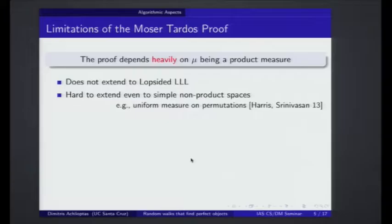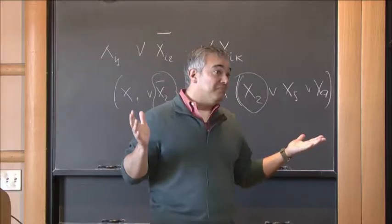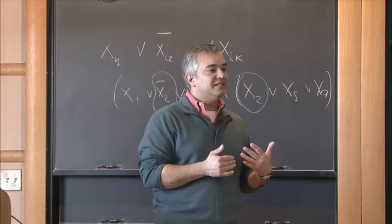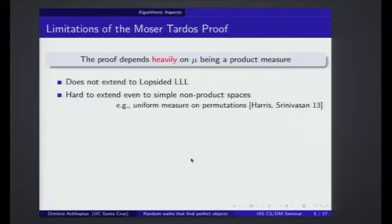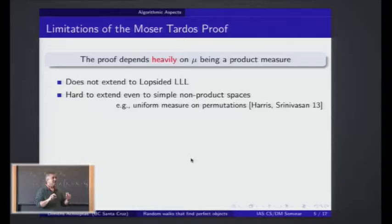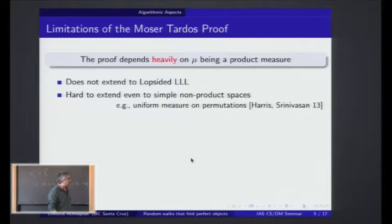Consider, for example, the case where omega, the set of elementary events, is the set of all possible permutations on n elements, and you consider the uniform measure on all permutations. Observe that now the independence is very difficult to establish because as soon as I tell you that element three goes to location seven, I have actually polluted the information about what happens to where every other element goes. Enough to make the proof not go through. Harrison and Srinivasan showed that they can expand the Moser-Tardos framework to this case, but it takes 30 pages of pretty hard labor for this very simple setting.